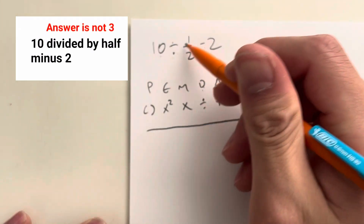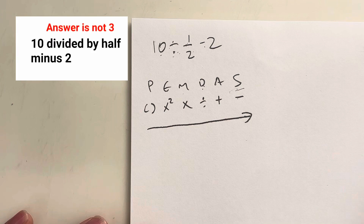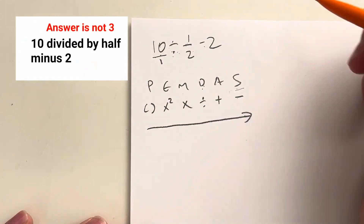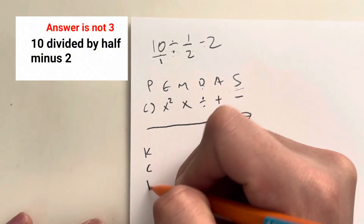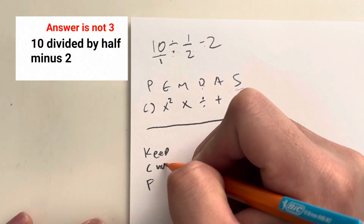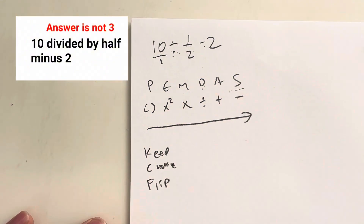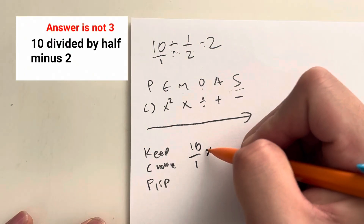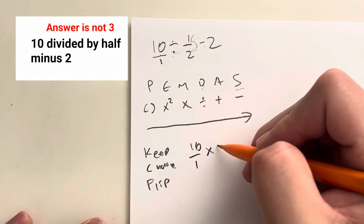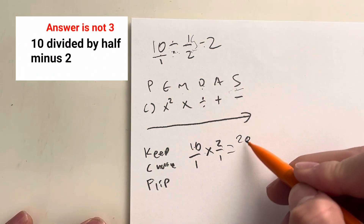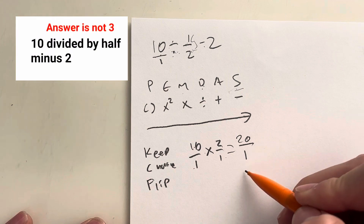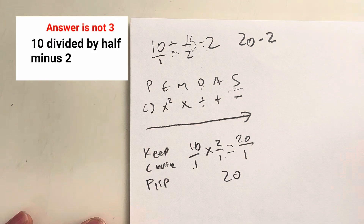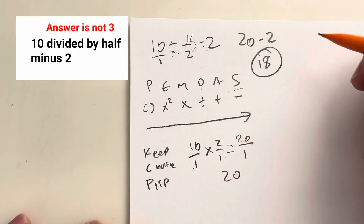So what's 10 divided by 1 half? We can't really divide it directly because 10 is not a fraction, so we represent 10 as 10 over 1. When dividing fractions, we use KCF: keep, change, and flip. We keep 10 over 1, change from division to multiplication, and flip 1 over 2 to become 2 over 1. 10 times 2 gives us 20, 1 times 1 gives us 1, so 20 over 1 is just 20. Lastly, 20 minus 2 gives us an answer of 18.